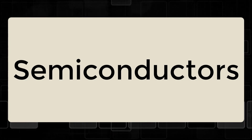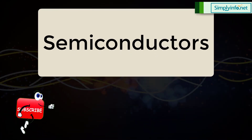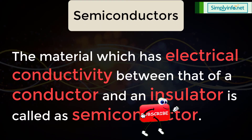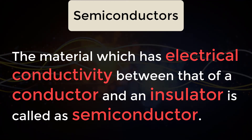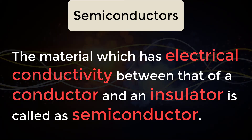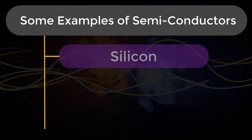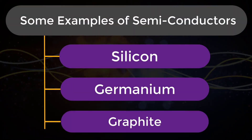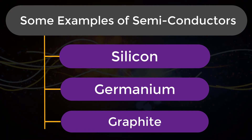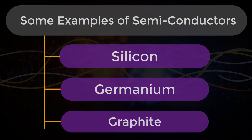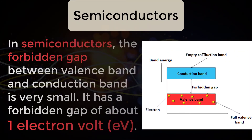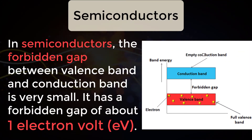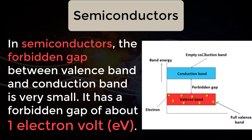Now let's look into semiconductors. The material which has electrical conductivity between that of a conductor and an insulator is called a semiconductor. Silicon, germanium, and graphite are some examples of semiconductors. In semiconductors, the forbidden gap between the valence band and conduction band is very small — about one electron volt (eV).